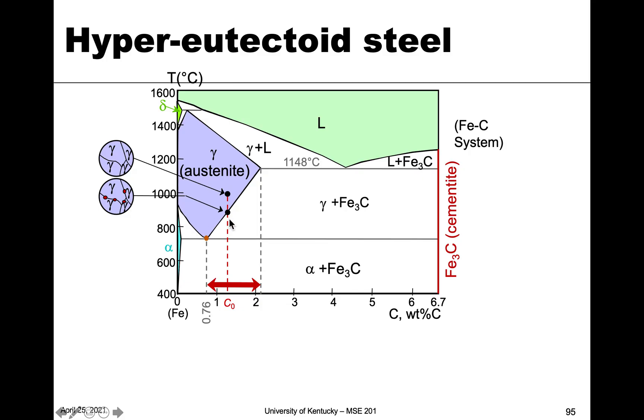And if we continue to decrease the temperature, we're going to form more and more cementite until we get to the eutectoid, just like we have before. And here again, it's showing it along the grain boundary, and that is the cementite.